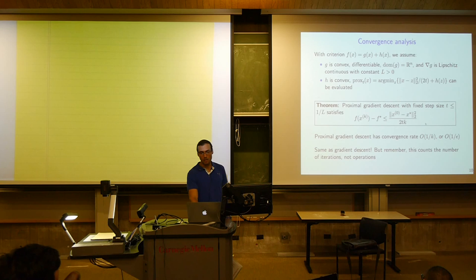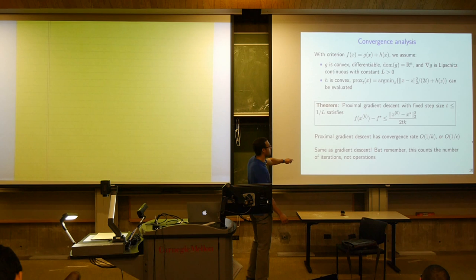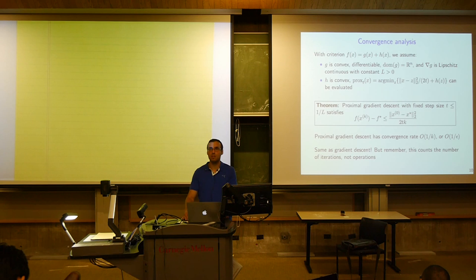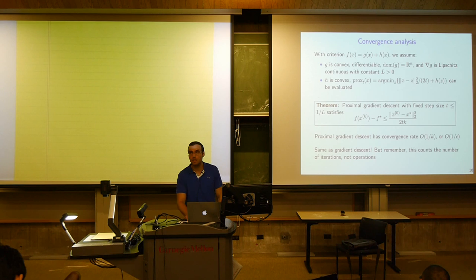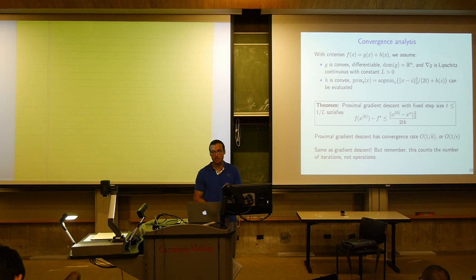This is the same rate as gradient descent, and the proof is similar. An important caveat is that this counts the number of outer iterations of proximal gradient, and in some cases each iteration is on par with gradient descent, but in some cases the prox operator is expensive to compute. So it may not be fair to compare algorithms just by iteration count, since each iteration may be doing very different things.